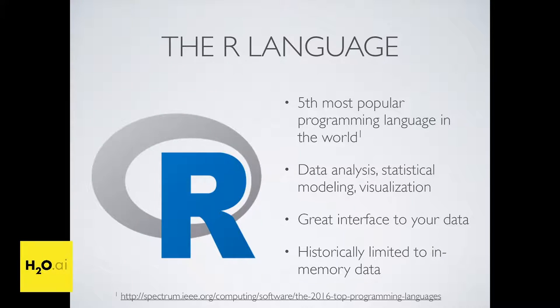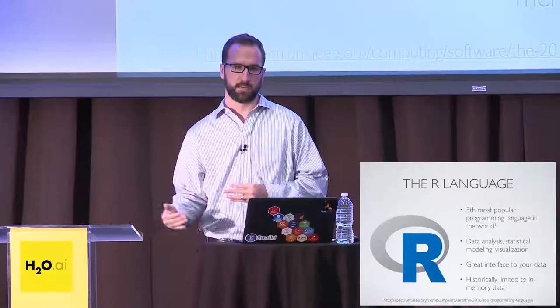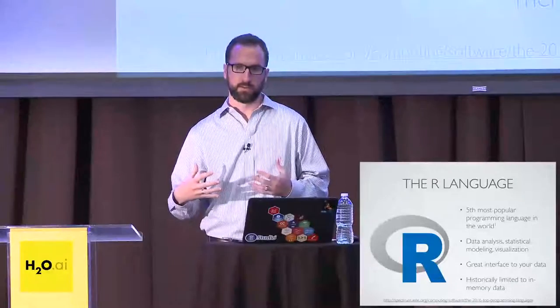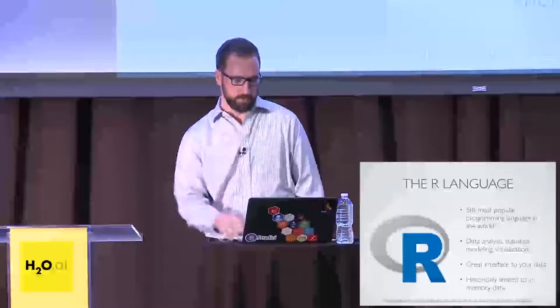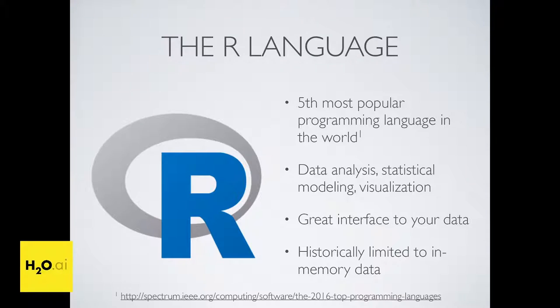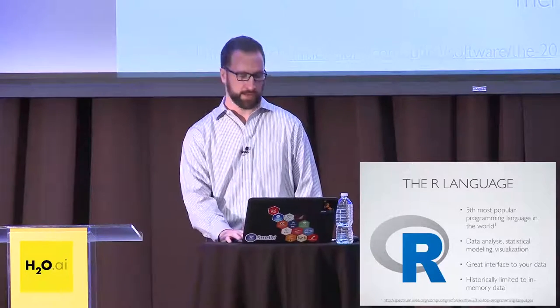I'll introduce both just for anyone who's unfamiliar. R is an incredible language for data analysis and statistical computing, visualization, all these kinds of things. In terms of the latest IEEE poll, it's actually the fifth most popular language in the world. R is really the easiest way to work with data as a programming interface. The one nuance is that historically it's been limited to in-memory data — if you have four gigs of RAM, you can analyze a three to three-and-a-half gig dataset, and that was your cap.